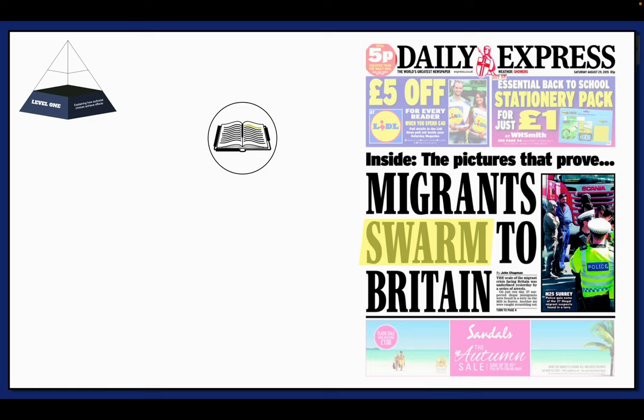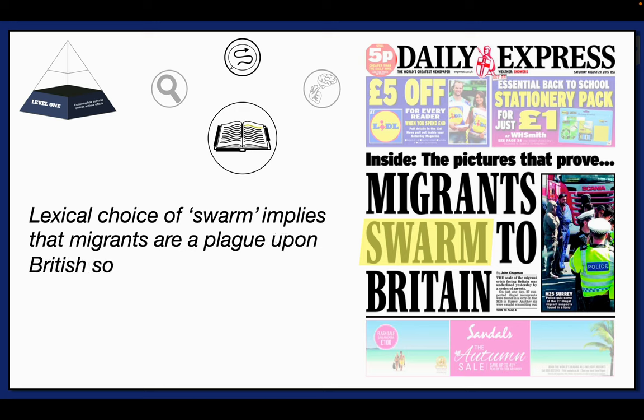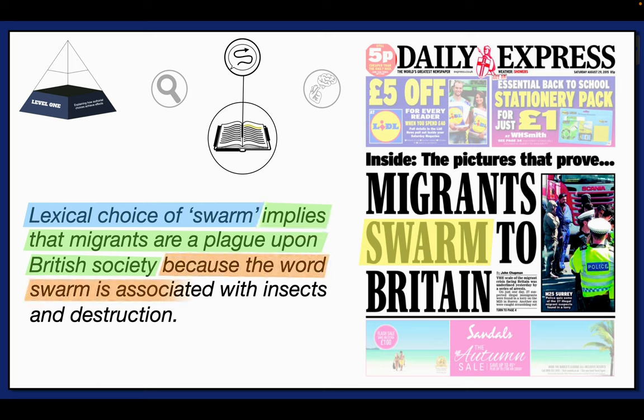After, we can consider the effects that this choice has. Is the lexical choice of the diction of Swarm to emphasize, to imply, or is it to evoke something? Well, I think it's to imply. Specifically, I believe that this choice is implying that migrants are a plague upon British society. At this point, I have my choice and specific effect, the choice of the diction of Swarm and the effect that it implies that migrants are a plague on British society. I now need to justify why this is the case. Well, I think it is because the word Swarm is associated with insects and destruction, in addition to having biblical connotations.